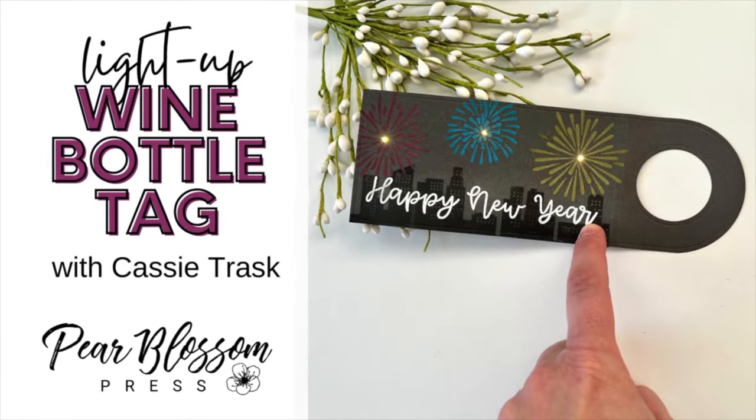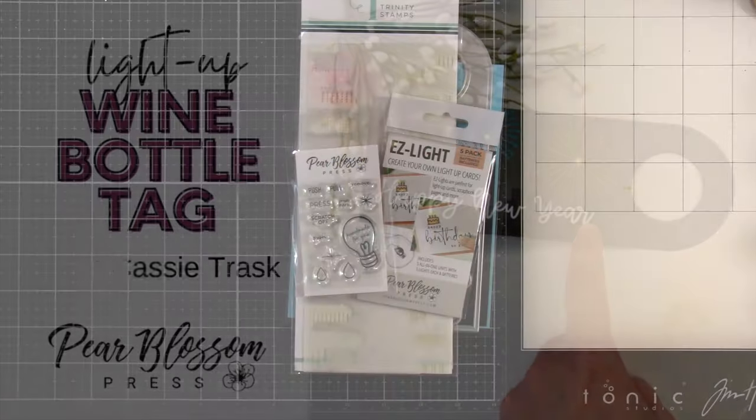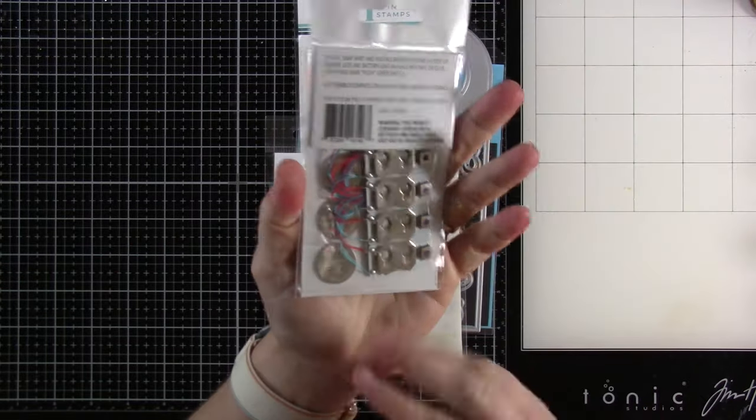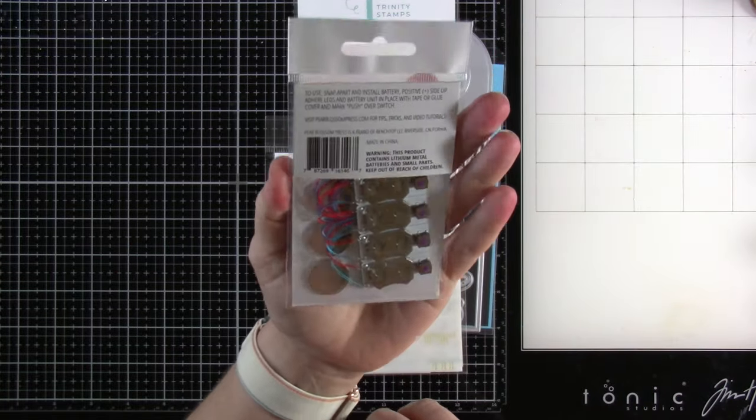Hi everyone, it's Cassie. Welcome back for another Pear Blossom Press video. Today we're going to be making a wine bottle tag using the Easy Light. You know I love these. So easy to use, just like in the name.